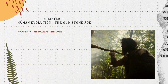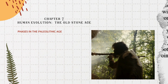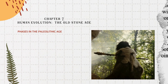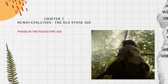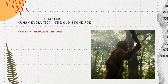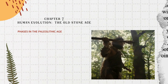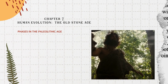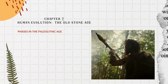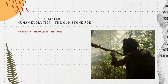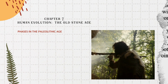Caves and rock shelters for use by human beings in the upper Paleolithic phase have been discovered at Bhimbetka, 45 km south of Bhopal. An upper Paleolithic assemblage, characterized by comparatively large flakes, blades, burins and scrapers, has also been found in the upper levels of the Gujarat sand dunes.